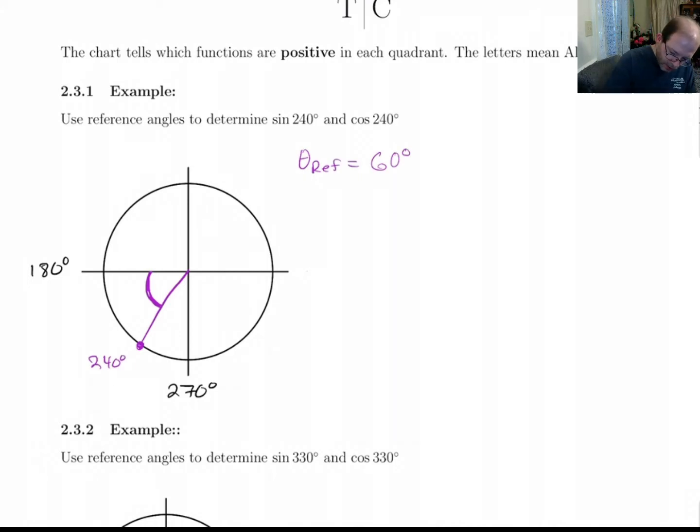So, to find sine of 240, well, basically what we need to do is first find sine of 60. Sine of 60 degrees is root 3 over 2. So sine of 240, its absolute value is going to be root 3 over 2, but we've got to figure out, do we need to put a plus or a minus there in front of it?